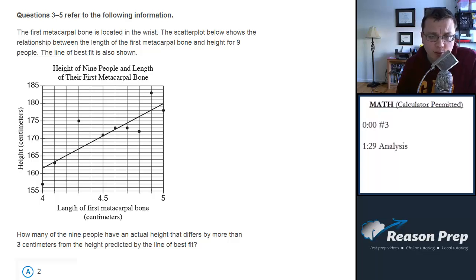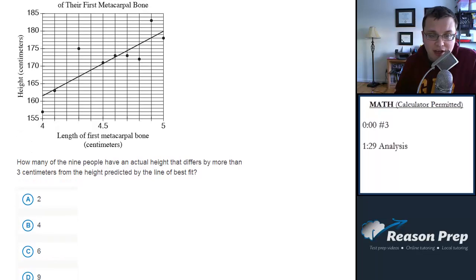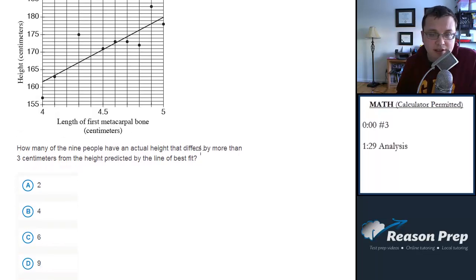The first metacarpal bone is located in the wrist. The scatter plot below shows the relationship between the length of the first metacarpal bone and height for nine people. Line of best fit is also shown. How many of the nine people have an actual height that differs by more than three centimeters from the height predicted by the line of best fit?